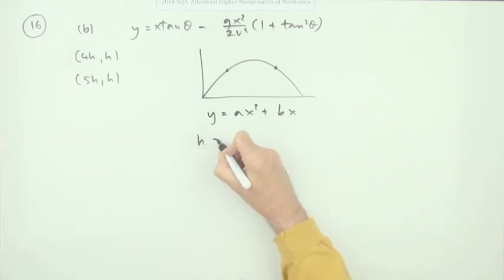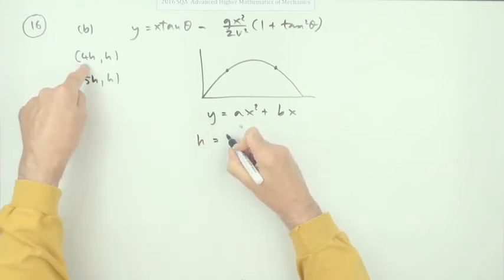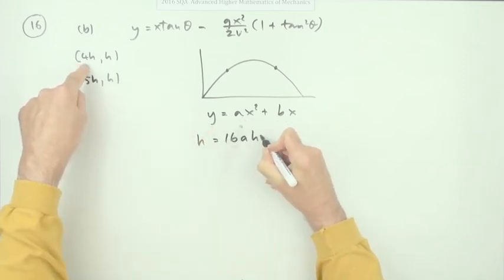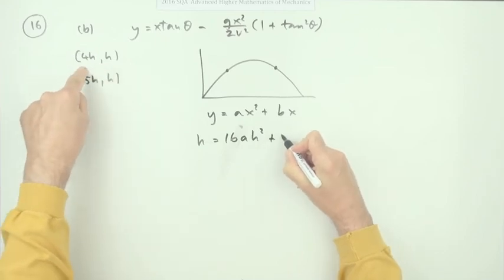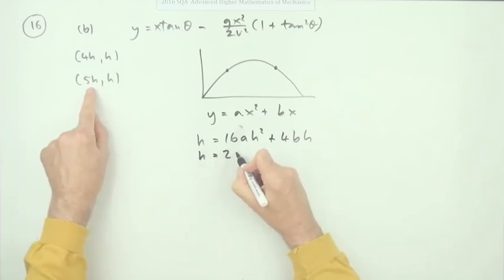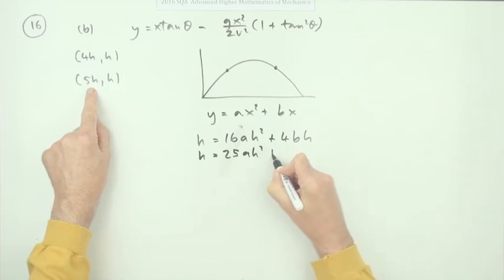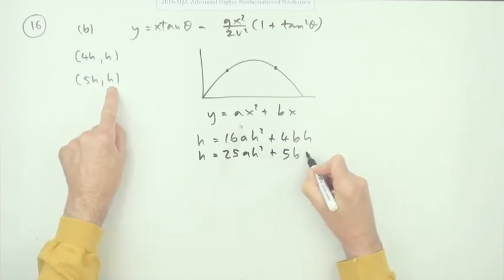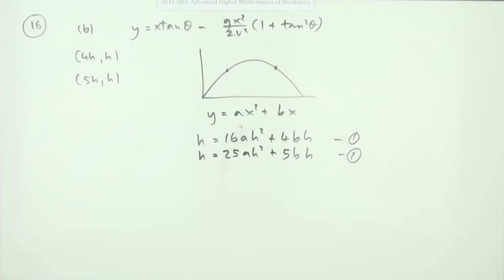You could form two equations from this. You'd have h equals a times 16 a h squared plus 4 b h, and h equals 25 a h squared plus 5 b h. There was a mark for forming these two.